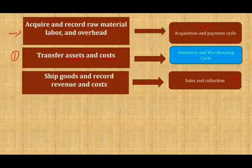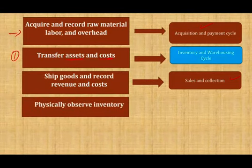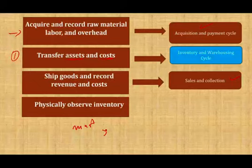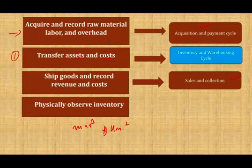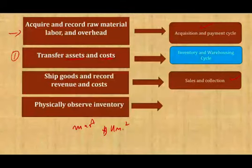Another part of auditing the inventory cycle is that the auditor must — it's mandatory — observe the client taking the physical inventory count. We want to know the dollar amount and the unit quantity, and we need to see if the inventory is still in saleable, good condition. This is not optional. It is part of the inventory and warehousing cycle.